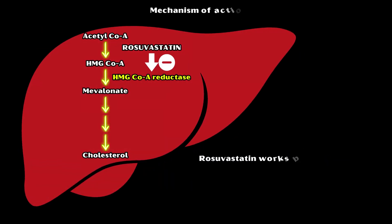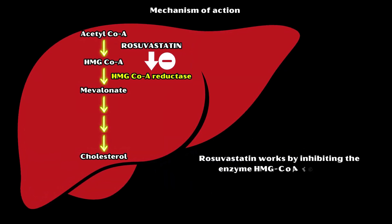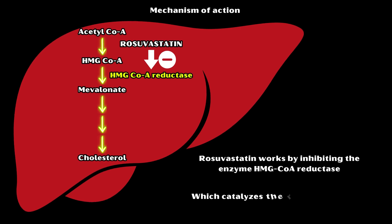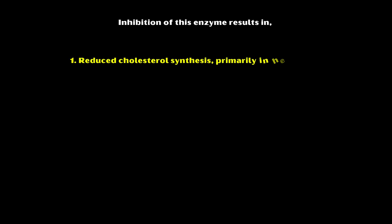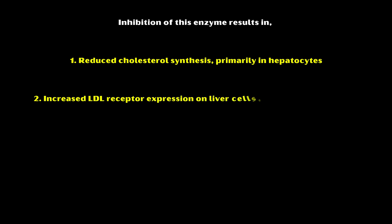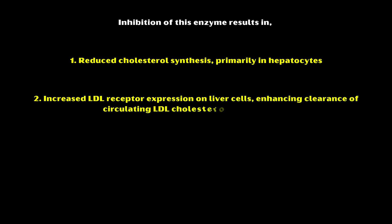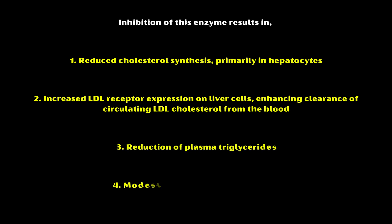Rosuvastatin works by inhibiting the enzyme HMG-CoA reductase, which catalyzes the rate-limiting step in the cholesterol synthesis pathway. Inhibition of this enzyme results in reduced cholesterol synthesis, primarily in hepatocytes, increased LDL receptor expression on liver cells, enhancing clearance of circulating LDL cholesterol from the blood, reduction of plasma triglycerides, and a modest increase in HDL cholesterol.